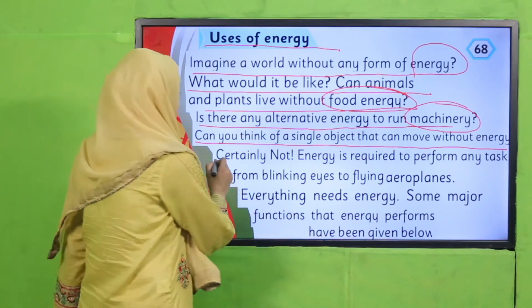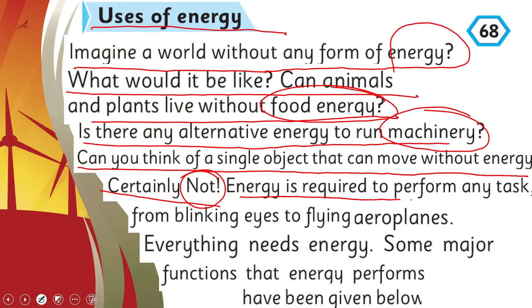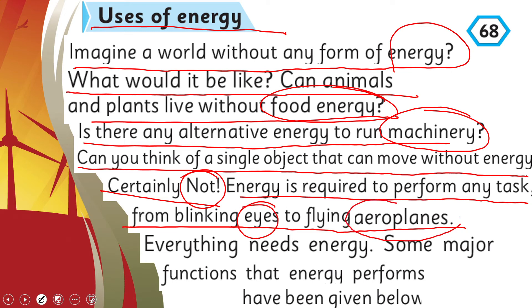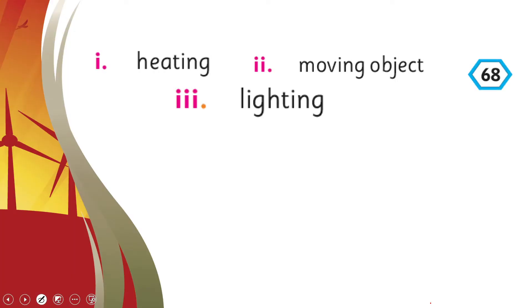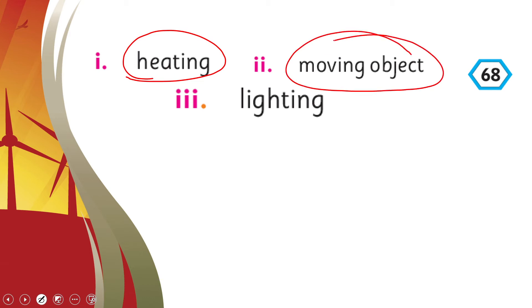Energy is required to perform any task — from blinking eyes to flying aeroplanes. Palak jhapakne ke liye aur ek bade se aeroplane ko urne mein, sab cheezon ko energy ki zarurat hai. Everything needs energy. Some major functions that energy performs: heating, it helps objects move, and it helps in lighting.